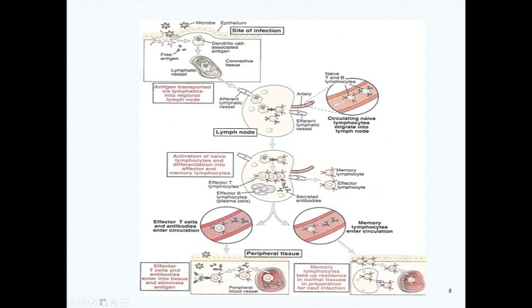The lymphocytes start differentiating between different types of cells: killer T cells that directly attack the infection, memory T cells that will remember that pathogen the next time, and effector T cells that are responsible for killing the pathogen. The effector T cells and antibodies enter circulation, the memory lymphocytes enter circulation and take up residence in normal tissues in preparation for the next infection. The effector T cells and antibodies enter into the tissue and eliminate the antigen — it's a multi-pronged approach.